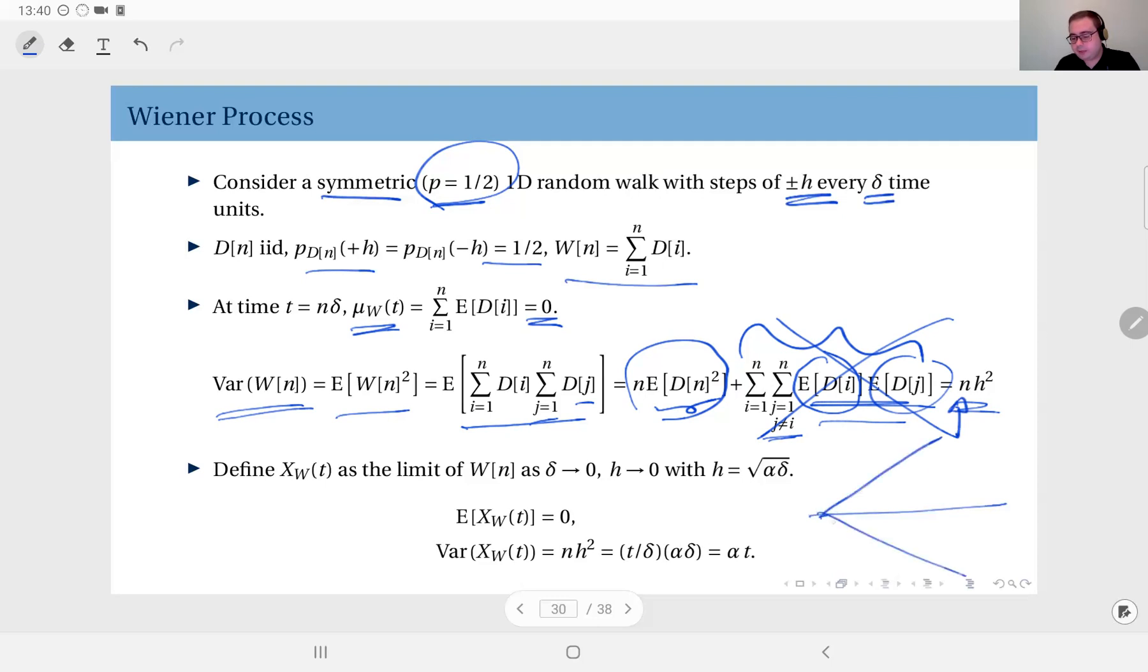Looking from here, the range of values it can take varies with time. Now we will take the limit of this random walk process. We'll define this process Xw as the limit of W[n] as delta goes to zero, so my time slots are approaching infinitesimal time instances, and h is going to zero. My steps get infinitesimally small, but we'll keep this relationship constant: h equals square root of alpha times delta. Alpha is a scaling and shape parameter.